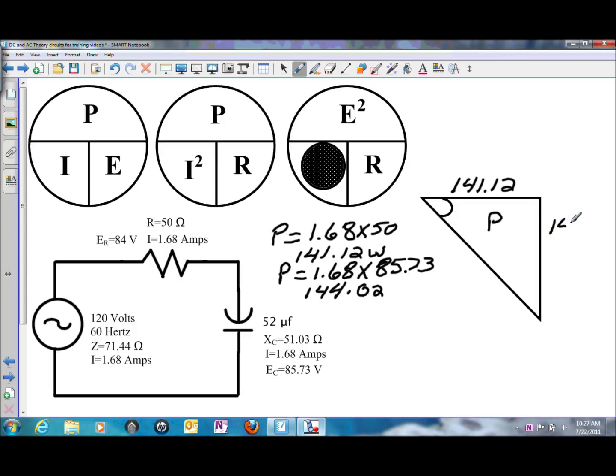And to solve for total, we can apply Pythagorean theorem and we can get power total would be the square root of the watts squared plus the VARs squared.